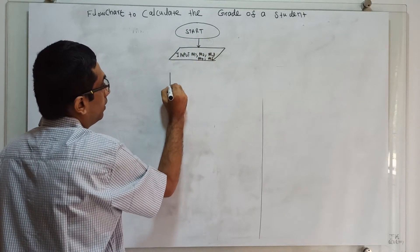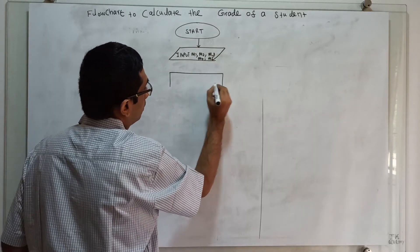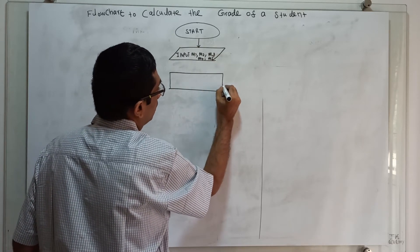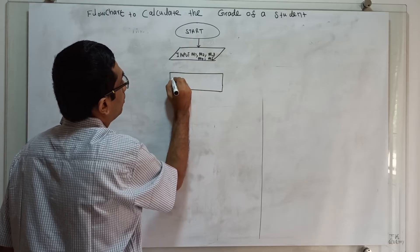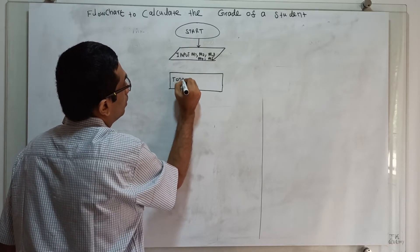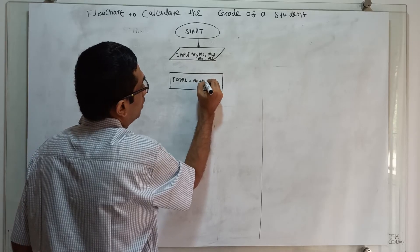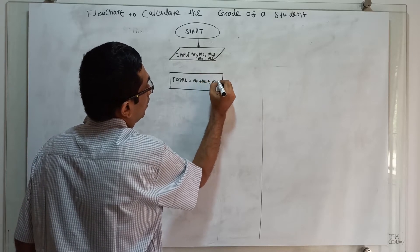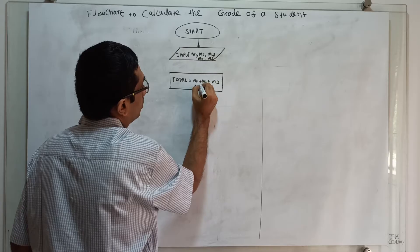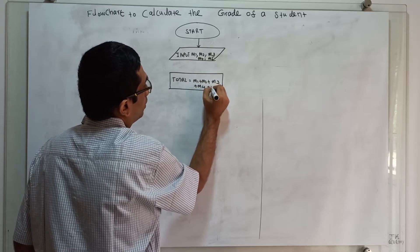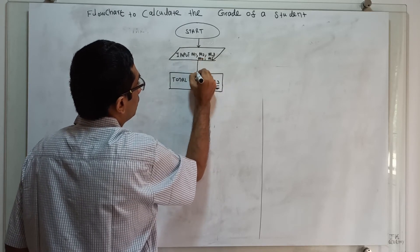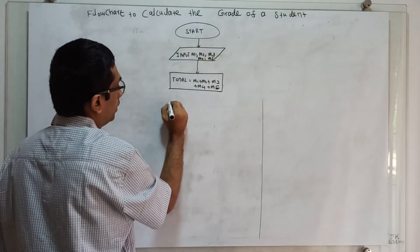...the total. Total equals m1 plus m2 plus m3 plus m4 plus m5. So this is my total.